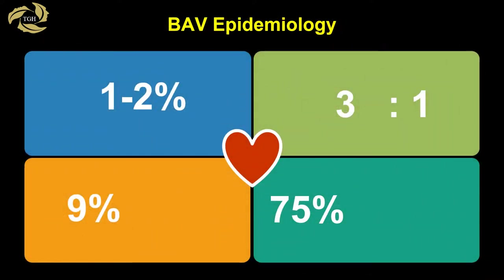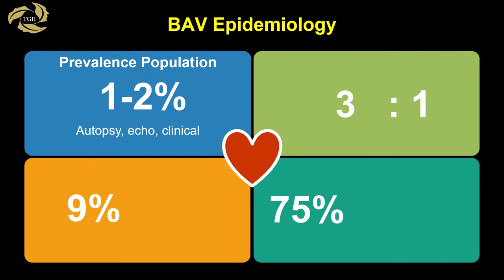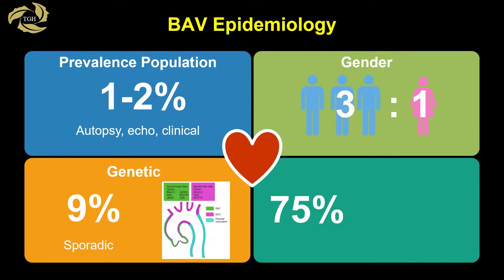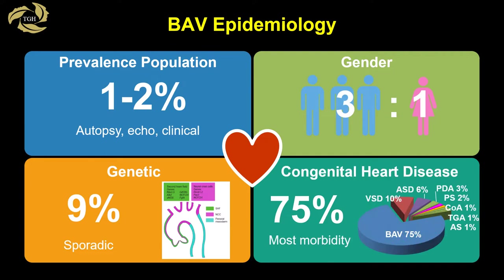Key numbers regarding the epidemiology of the bicuspid aortic valve include a prevalence of one to two percent in the general population, depending on whether autopsy, echo, or clinical studies are cited. A three-to-one gender bias, being more common in males. Abnormal genetic findings occur as it is familial in nine percent of patients, and it is recommended that first-order relatives be screened. It is the most common congenital heart lesion worldwide, comprising 75 percent of all lesions, and causes more morbidity and mortality than all other congenital lesions combined.